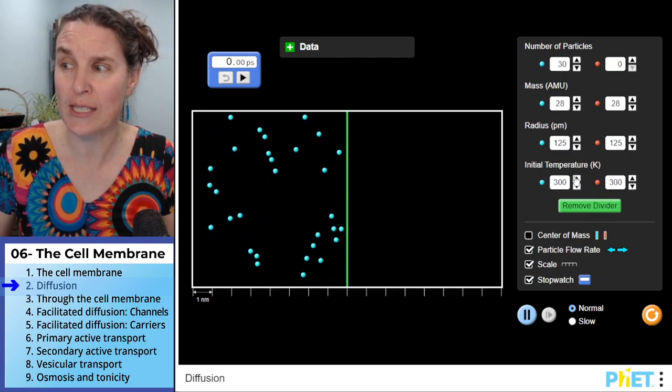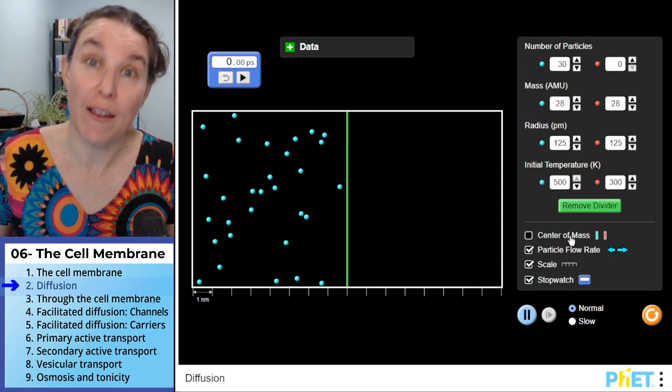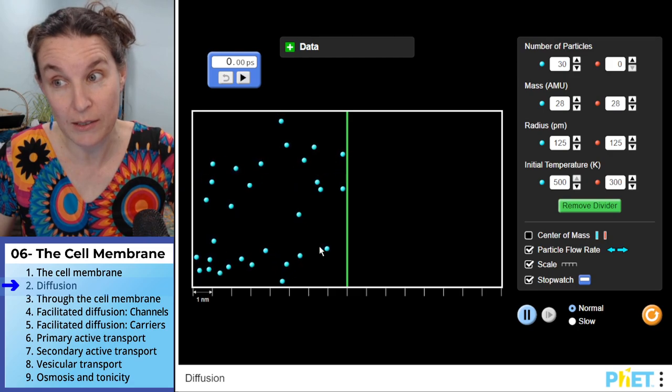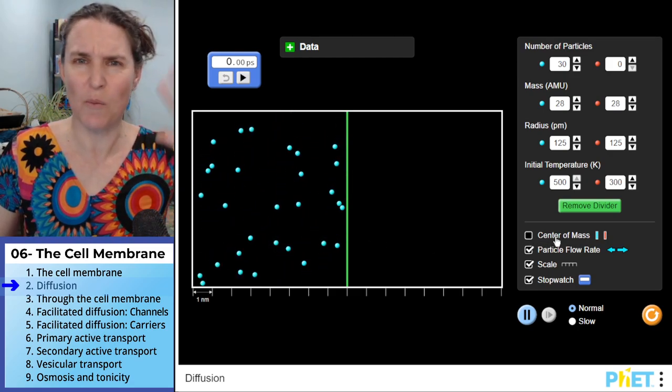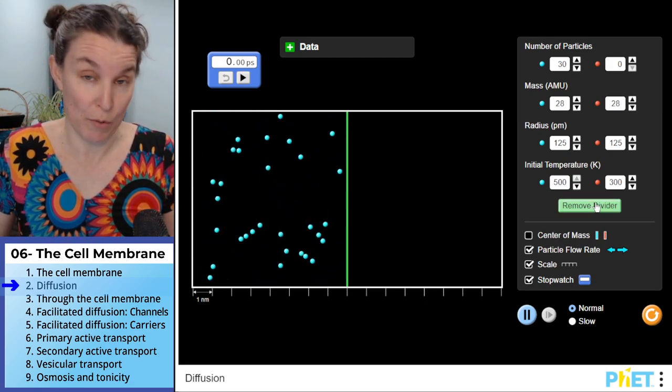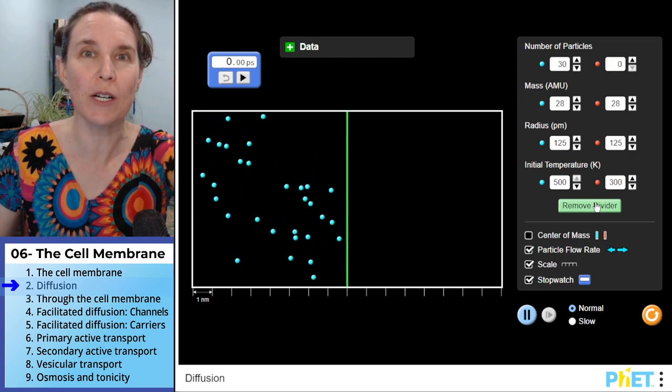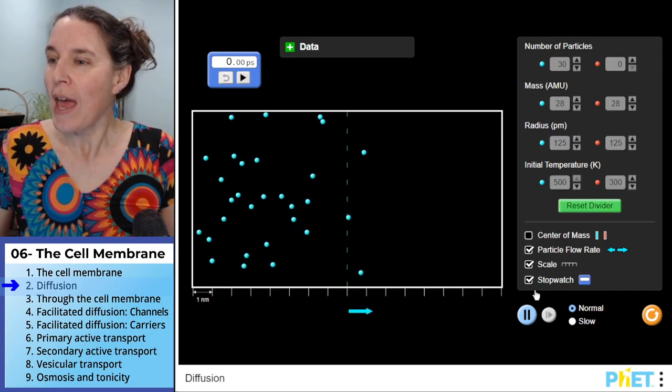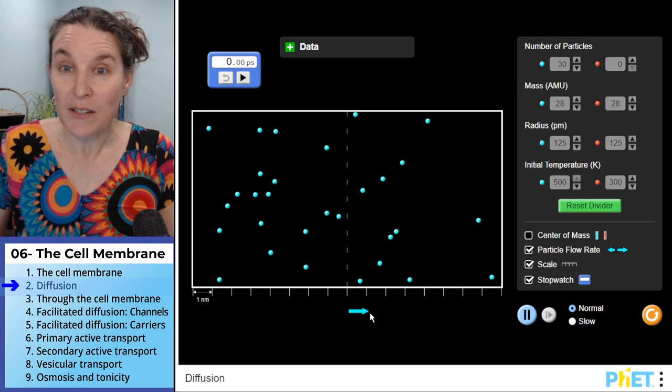I can actually change that over here by changing their temperature. If I increase the temperature, I can make them go faster. I can only get them up to 500 degrees Kelvin. But they should be going a little bit faster. I don't know if I can tell the difference. But then I can remove the divider. And when I remove the divider, you predict what is going to happen. Where are they going to go?